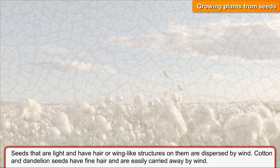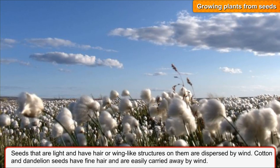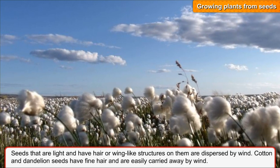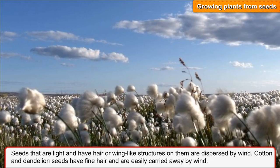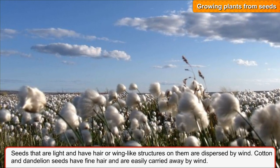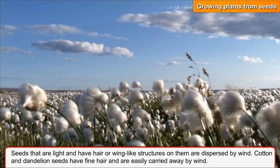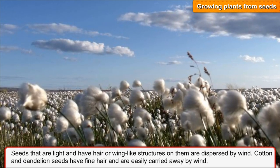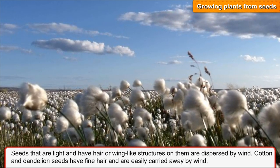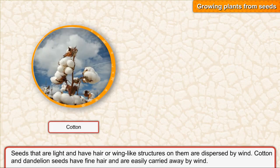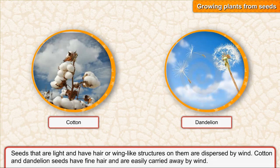Dispersal by wind. Seeds that are light and have hair or wing-like structures on them are dispersed by wind. Cotton and dandelion seeds have fine hair and are easily carried away by wind.